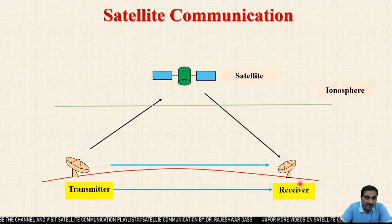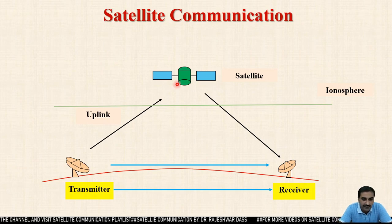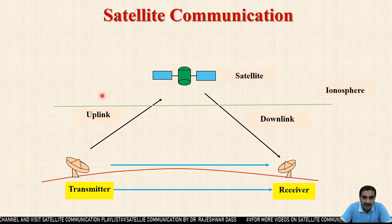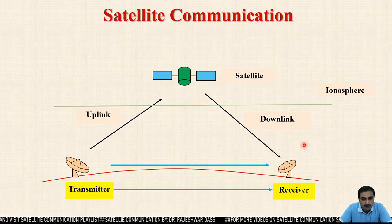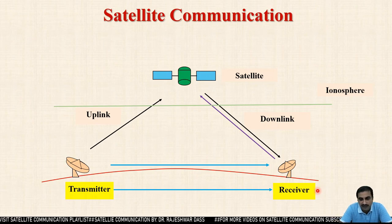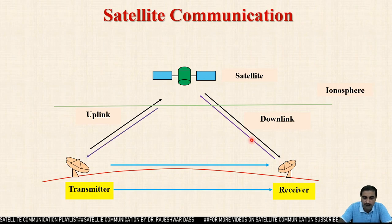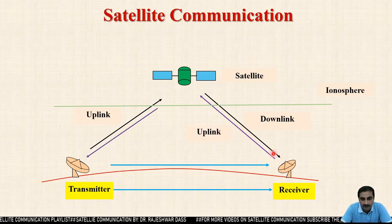The link between the transmitter and the satellite is known as the uplink, and the link between the satellite and the receiver on the earth station is known as the downlink. If the receiving antenna also has the capability to transmit, it can serve both uplink and downlink roles.